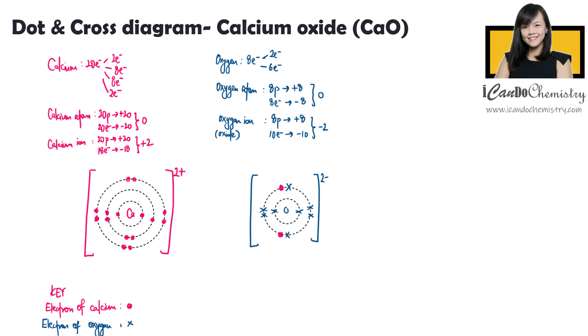Sometimes in the examination questions, they will ask you to draw only the outermost electrons. Hence, we can omit the inner shells and this is what you should draw.